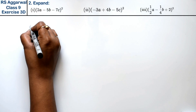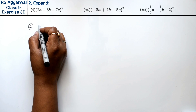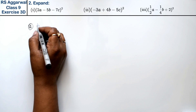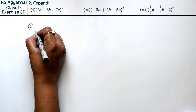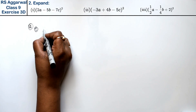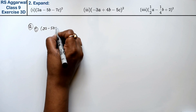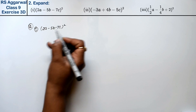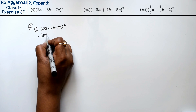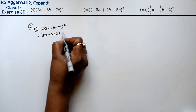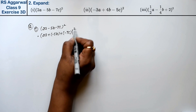Let's do question number 2 of exercise 3D — factorization of polynomials, question number 2, expand. First part is (2A minus 5B minus 7C) whole square. We can write this as (2A) plus (minus 5B) plus (minus 7C) whole square.